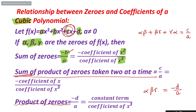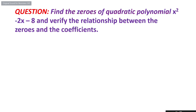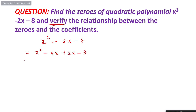Note the signs: negative, then positive, then again negative. Now let us discuss a question to apply these relationships. Find the zeros of the quadratic polynomial x² minus 2x minus 8, and then verify the relationships we have just learned. We need to find the zeros first, and then verify the relationship — using factorization and splitting the middle term method.